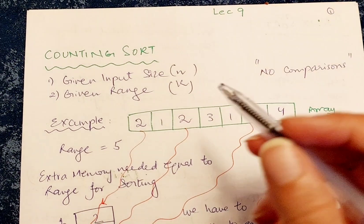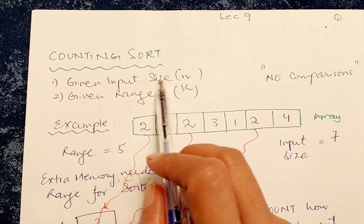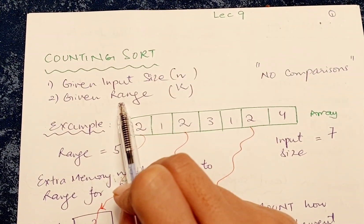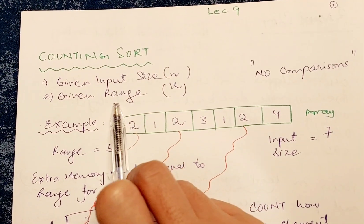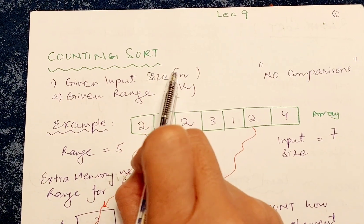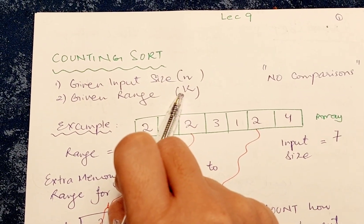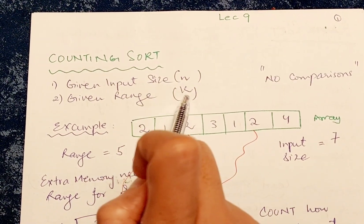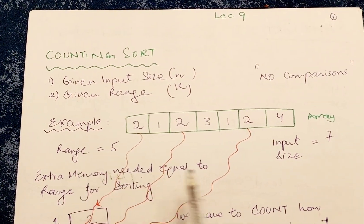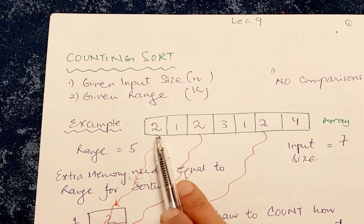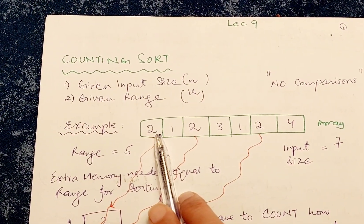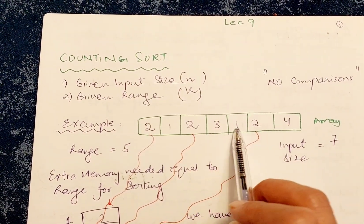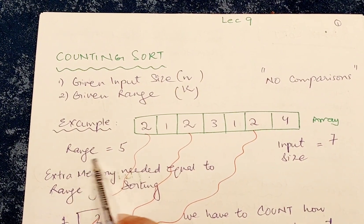Since we're not doing comparisons, the first thing is that you will be given an input and you need to know the size of your input. The second thing is that you need to know the range. In an exam question, these two values will be given to you. The input size is represented by n and the range is represented by k. Let's take an example: we are given an array with these numbers. The size of our input is seven, and we are given that the range is five.